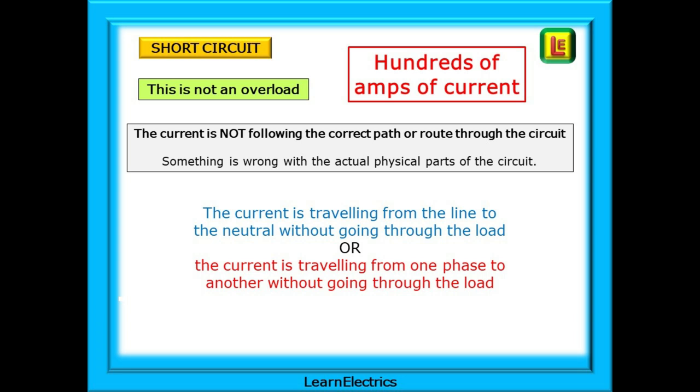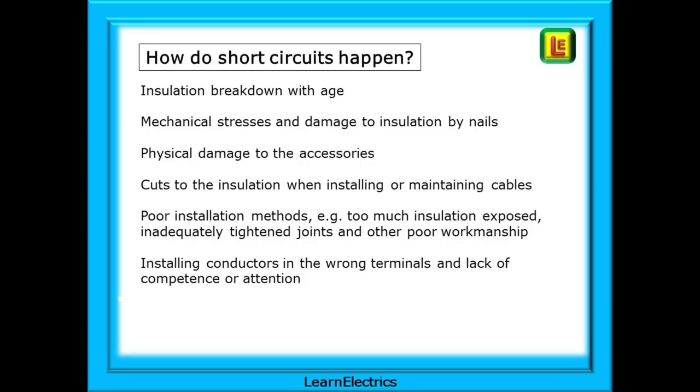How do short circuits happen? Well, how many ways can you get the line and neutral wires to touch each other? It could be insulation breakdown with age or mechanical stresses and damage to the insulation by nails. There could be physical damage to the accessories or cuts to the insulation when installing or maintaining cables. When we screw all the covers down, parts and cables may begin to touch. Poor installation methods can be a cause. For example, too much insulation is exposed or inadequately tightened joints and other poor workmanship that allows conductors to work loose and touch. And installing conductors in the wrong terminals and lack of competence or attention to detail are other causes.